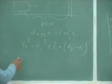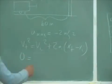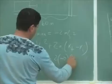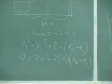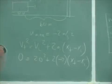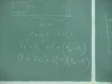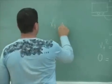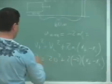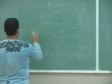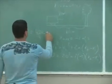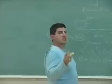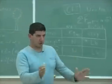Set the v final equal to zero. The initial is 20. Acceleration is negative two. And then let's solve for the distance that the car will have traveled by the time it stops. So you're going to have x final minus x initial is going to be 400 over 4. Is equal to 100 meters.